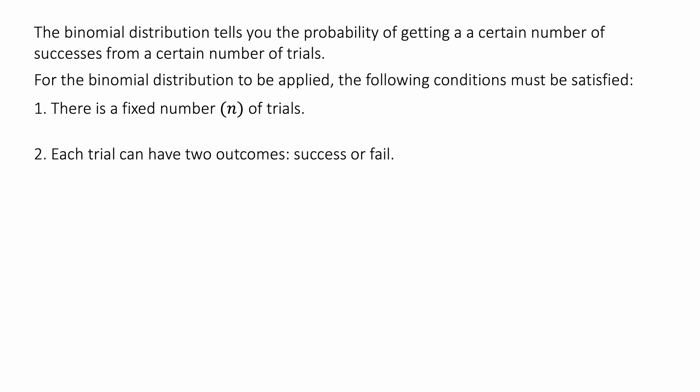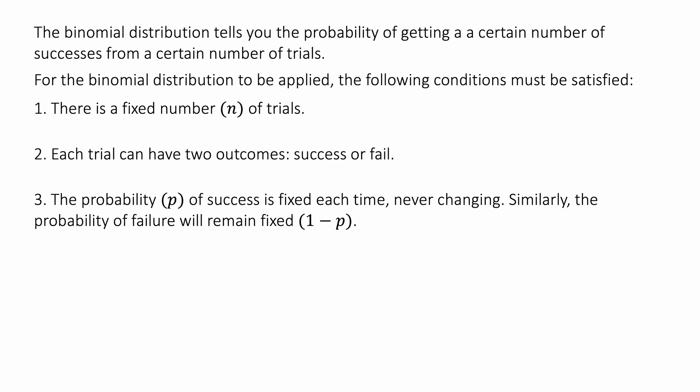If you wanted to care about all six outcomes, that would not be binomial. Three: the probability of success is fixed each time, and we call that probability p. Similarly, the probability of failure will remain fixed and that is one minus p. Four: the trials are independent of each other — effectively the same as condition three — meaning the probabilities remain the same each time and the outcome of one trial doesn't affect the probability of another.